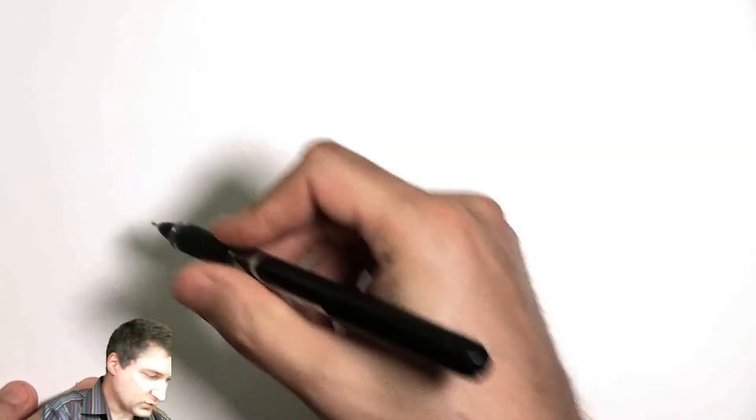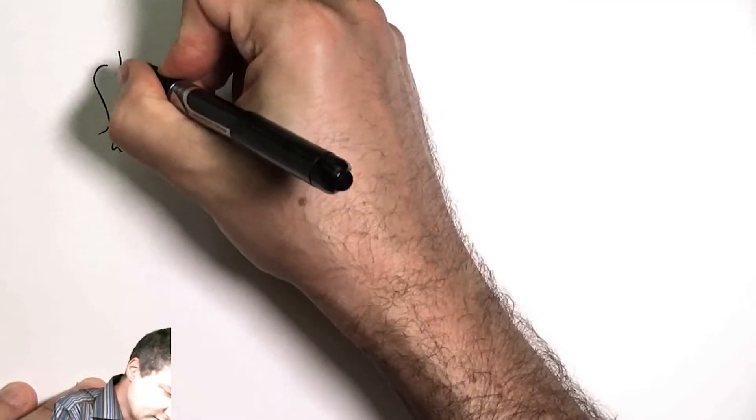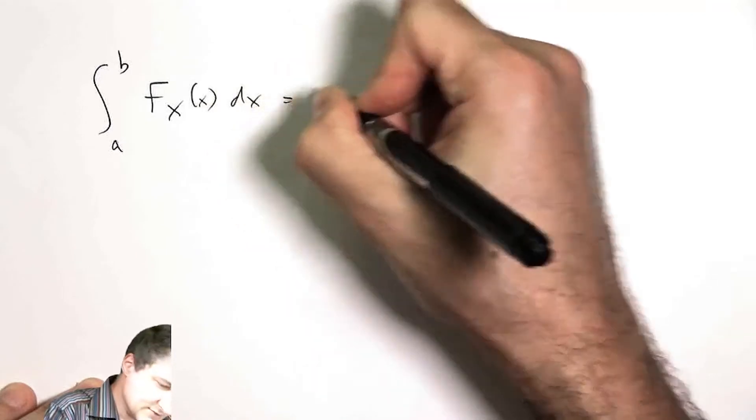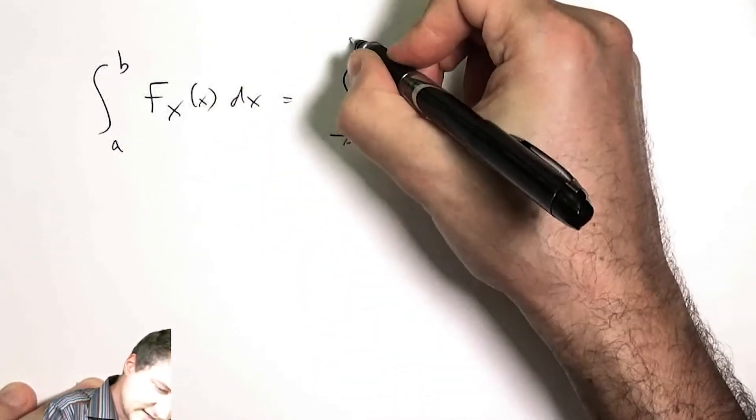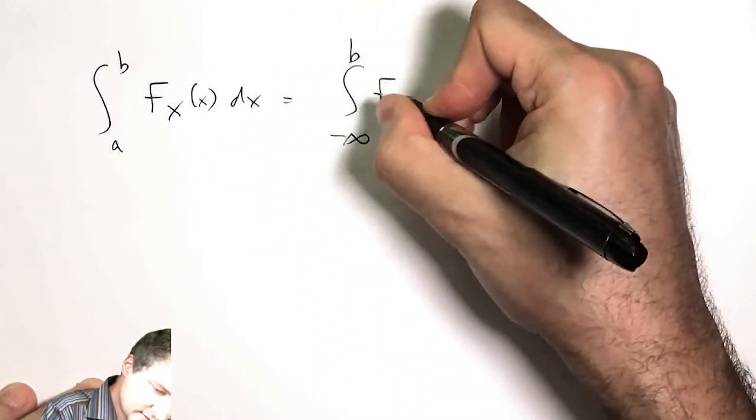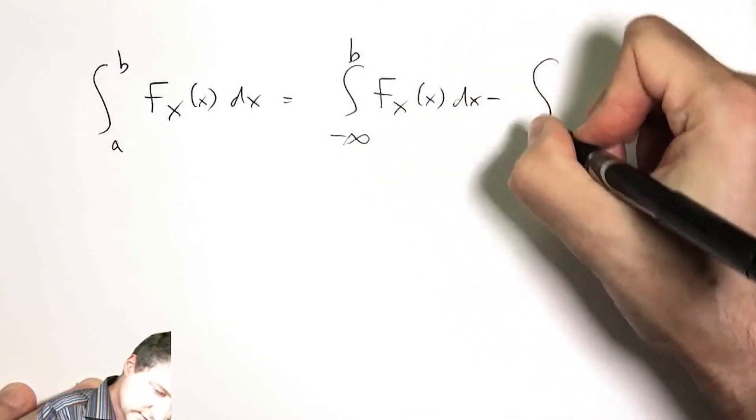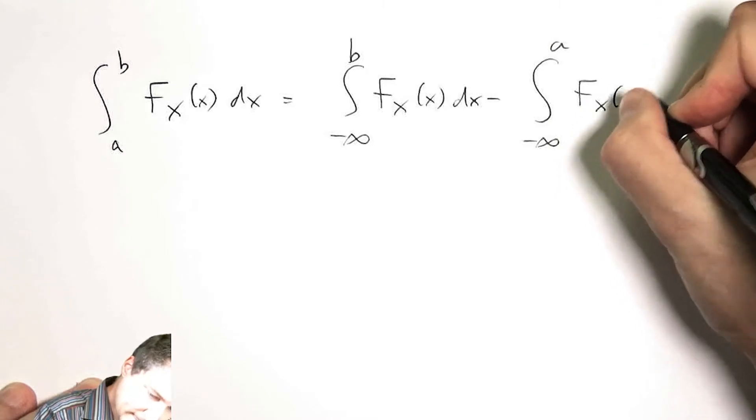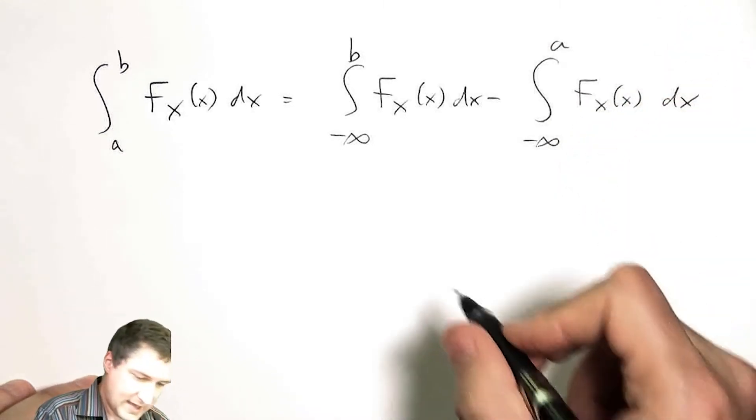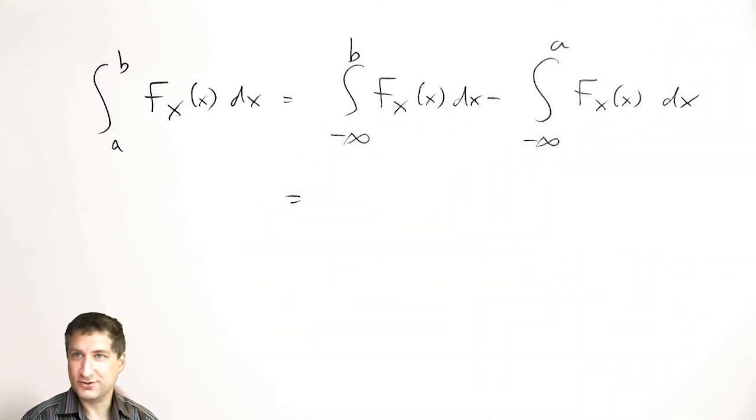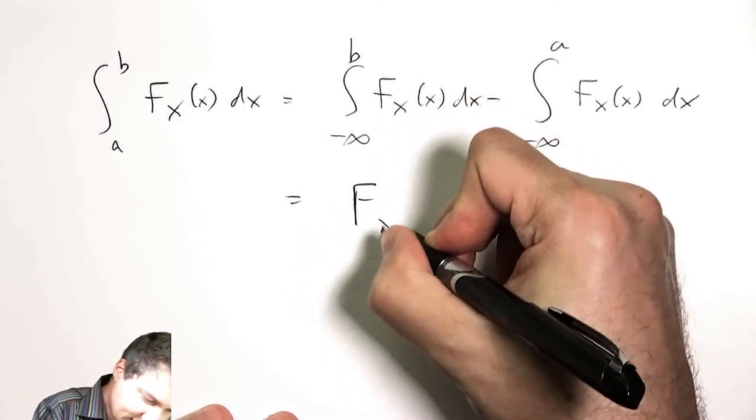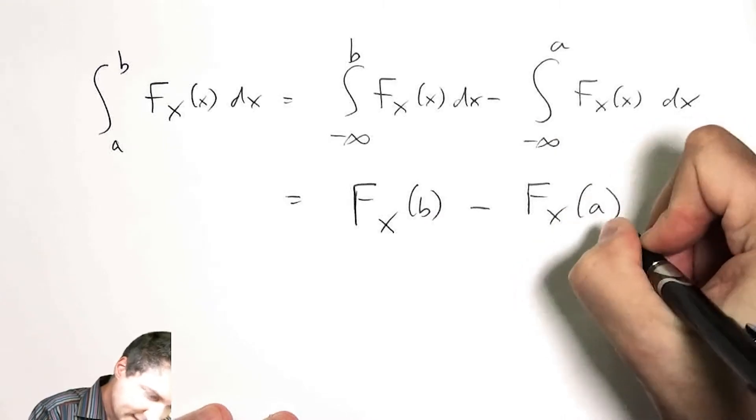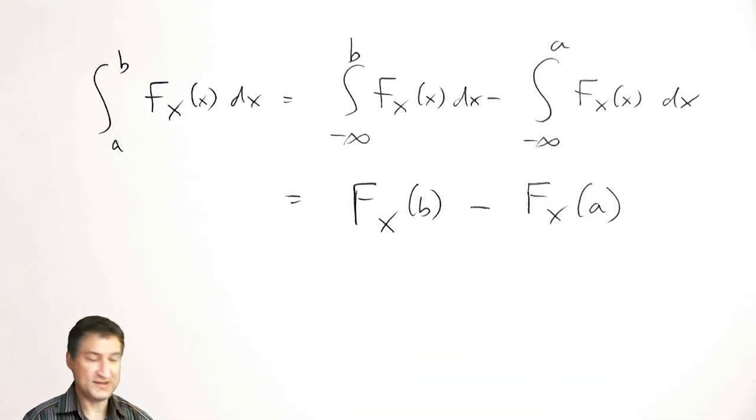The reason all this works is by the fundamental theorem of calculus. This is something you learned way back in calc one. This integral is written in a slightly different way like this, and then if I take the integral or the anti-derivative, this is that number at b minus that number at a. These are just the values of the CDF.